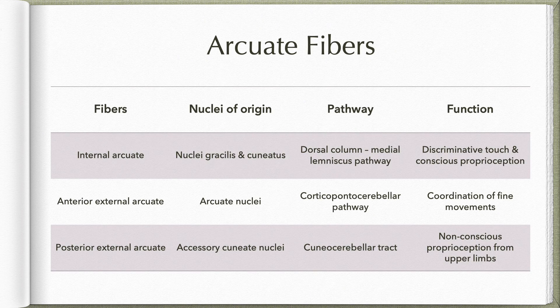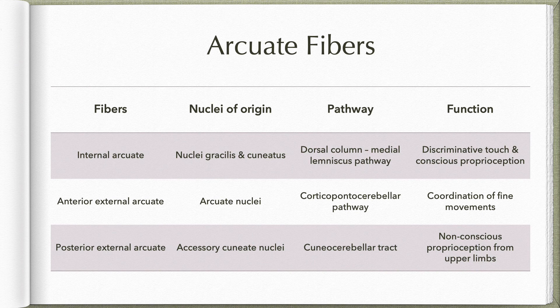There are three types of arcuate fibers in the medulla. The internal arcuate fibers begin from nucleus gracilis and nucleus cuneatus, belong to the dorsal column medial lemniscus pathway, and carry discriminative touch and conscious proprioception. The anterior external arcuate fibers begin from the arcuate nuclei, belong to the corticopontocerebellar pathway, and are involved in coordination of fine movements. The posterior external arcuate fibers begin from the accessory cuneate nuclei, belong to the cuneocerebellar tract pathway, and carry non-conscious proprioceptive information from the upper limbs to the cerebellum.